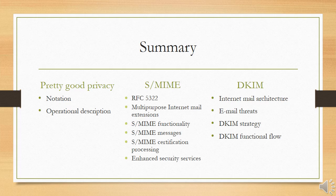In this module we have covered three main topics: Pretty Good Privacy (PGP), S/MIME, and DKIM. Under PGP we looked at notation and operational description. Under S/MIME we studied RFC 5322, Multipurpose Internet Mail Extensions, S/MIME functionality, S/MIME messages, S/MIME certification processing, and enhanced security services. Finally, under DKIM we covered internet mail architecture, email threats, DKIM strategy, and DKIM functional flow. Thank you.